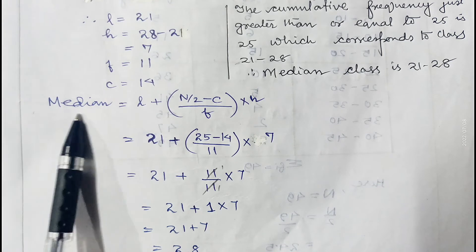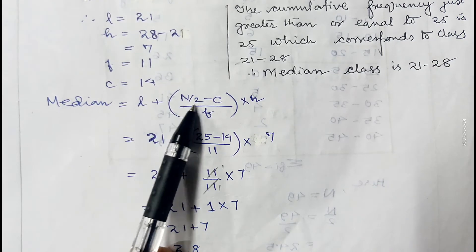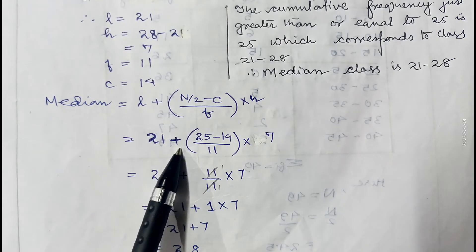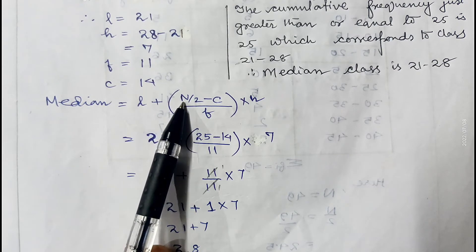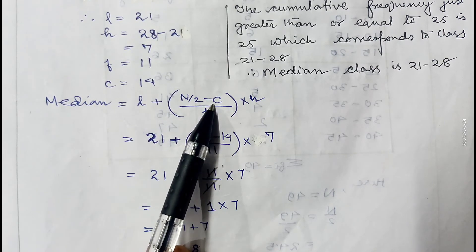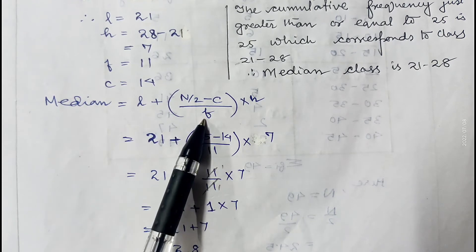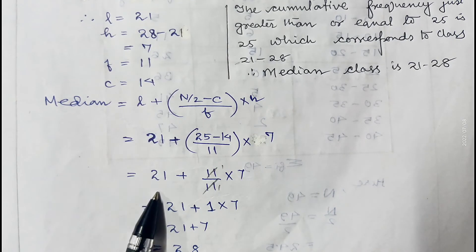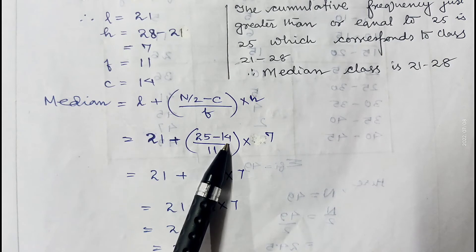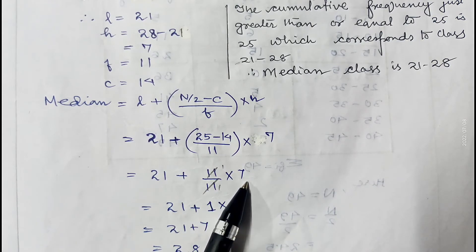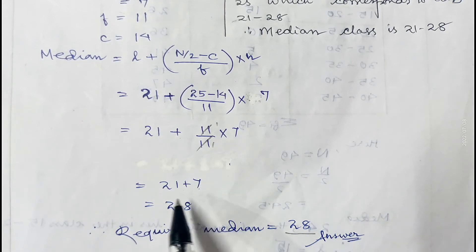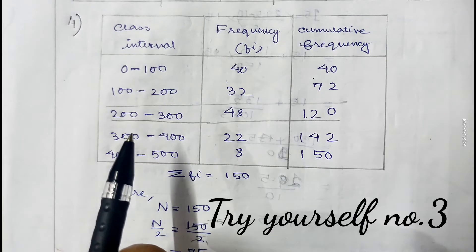Applying the median formula: Median = l + [(n/2 − c) / f] × h. Here l is 21, n/2 is 25, c is 14, f is 11, h is 7. So: 21 + [(25 − 14) / 11] × 7 = 21 + (11/11) × 7. The 11s cancel, leaving 21 + 7 = 28. Therefore the required median is 28.